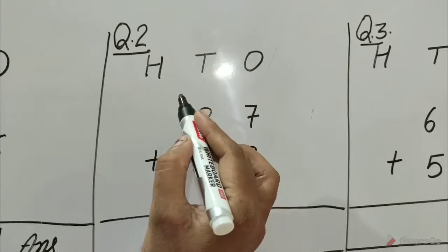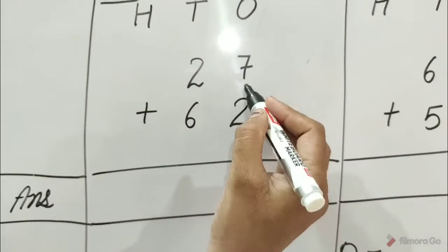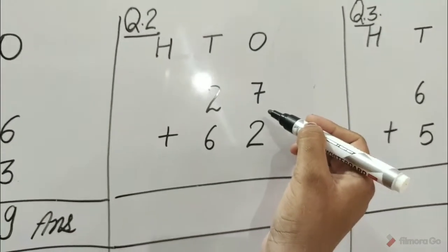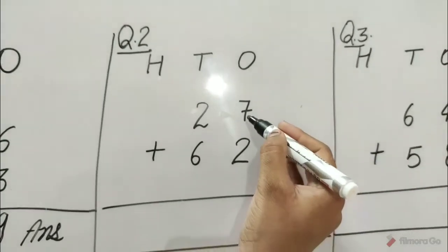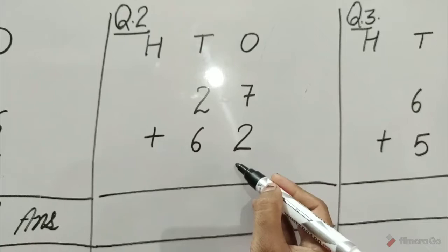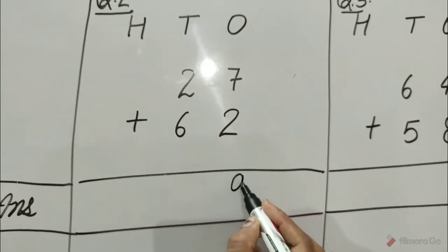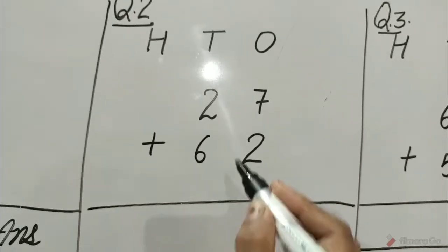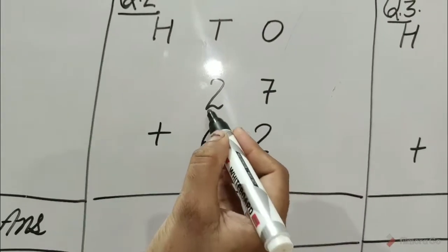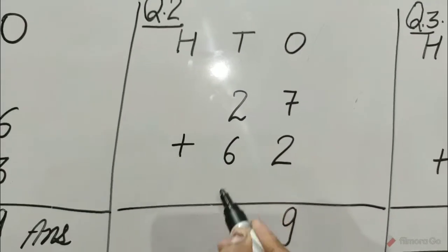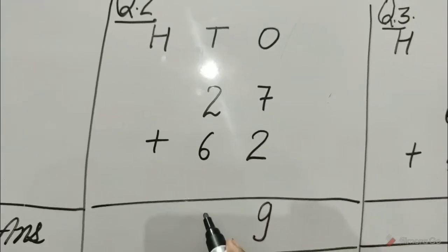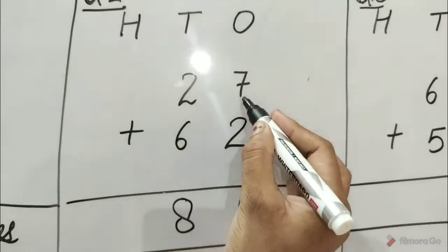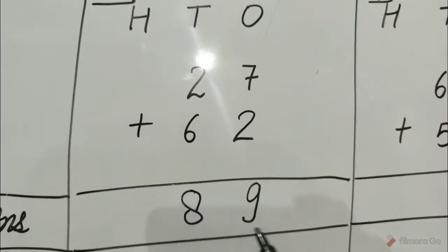Question number 2 is 27 plus 62. We will add ones first: 7 ones plus 2 ones is equal to 9 ones. Write under the ones line 9. After that we add tens: 2 tens plus 6 tens is equal to 8 tens. Hence, 27 plus 62 is equal to 89.